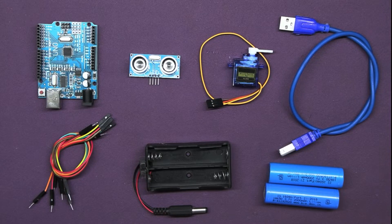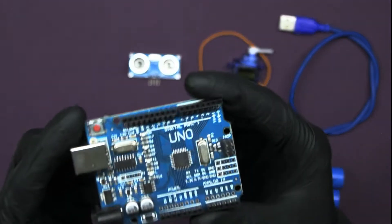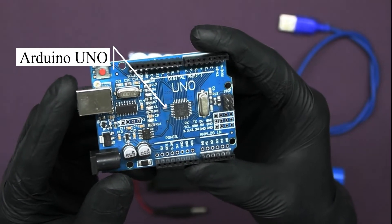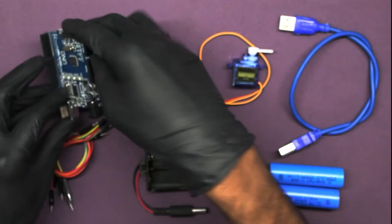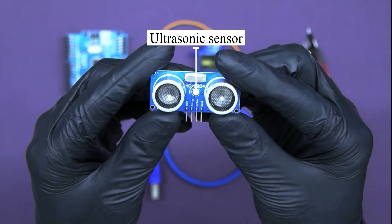Before we begin, let's take a quick look at what we need for this project. First, we have the Arduino UNO. This is the brain of our project. It's a microcontroller that we'll be programming to read data from the ultrasonic sensor and control the servo motor. Next, we have the ultrasonic sensor.